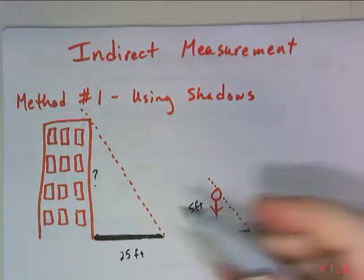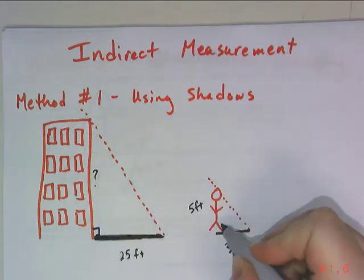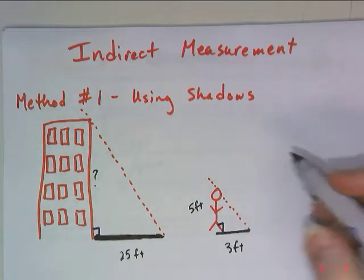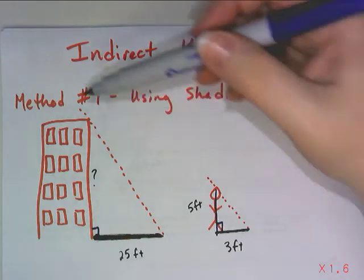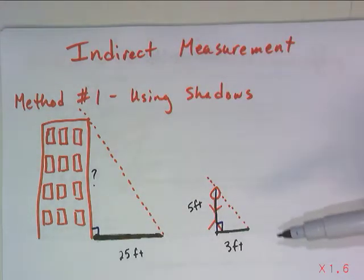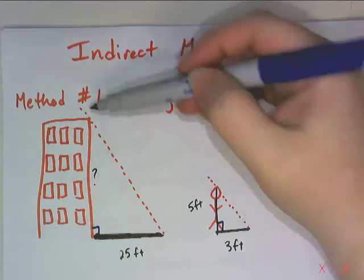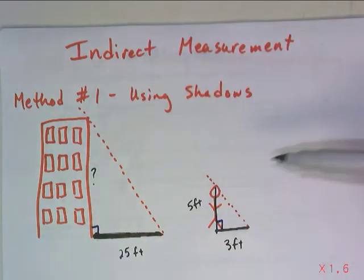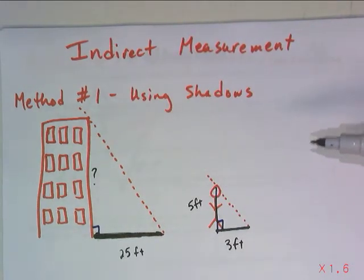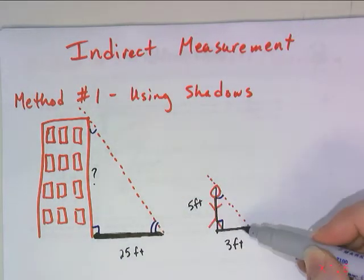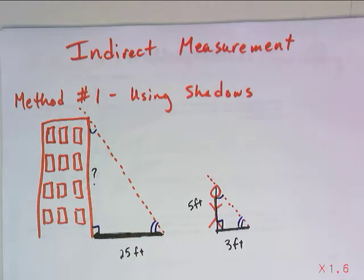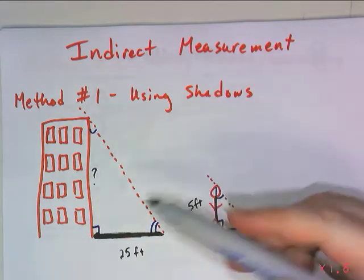Now, first of all, I don't know if you can see it, but what we've created are similar triangles. The reason is both the building and our person, we assume, are standing up at a nice tall right angle. And the angle of the sun's rays should be hitting the ground at the exact same angle, should be hitting the building and our person at the exact same angle. And so because our angles are going to be the same, these angles are going to be the same, we know that we have similar triangles. So we can use these similar triangles to find our missing side length.